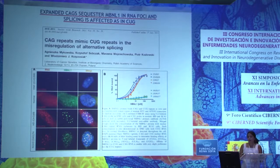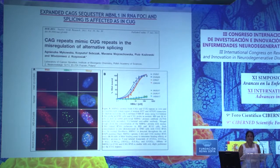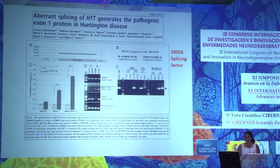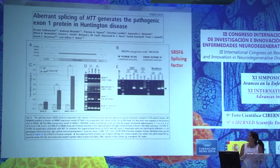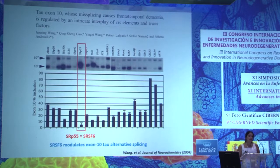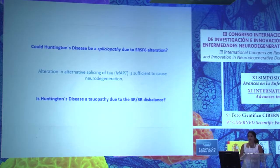In 2011, the group of Christia described that CAG expansions could mimic CUG repeats by sequestering splicing factors, at least in cell models. More recently, the group of Gill and Bates described for the first time that in Huntington's disease there is aberrant alternative splicing producing toxic fragments of exon 1 huntingtin. They proposed as a candidate the splicing factor SRSF6, which they described as able to bind to the CAG repeats. It is known that this splicing factor can also modulate the alternative splicing of exon 10 of tau. So, could Huntington's disease be a spliceopathy due to SRSF6 alteration?